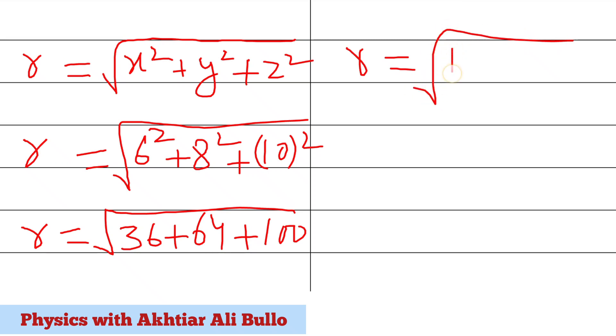36 plus 64 is 100, plus 100, so it will be √200.